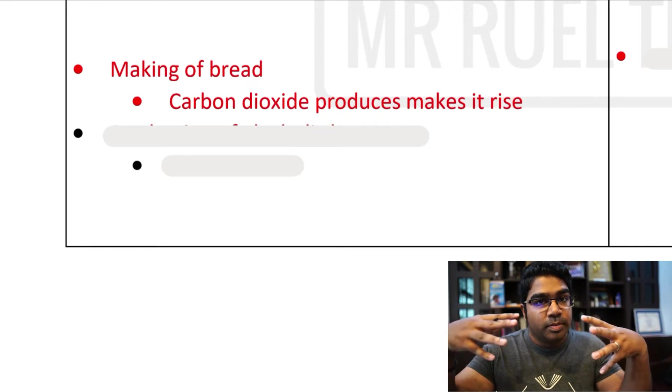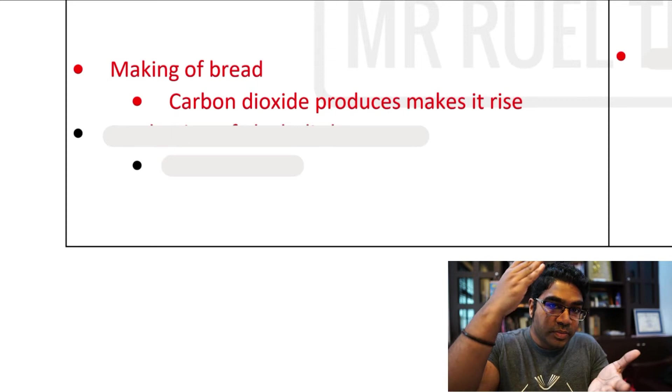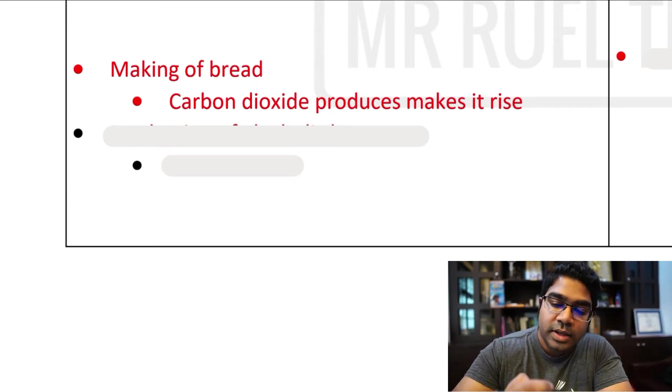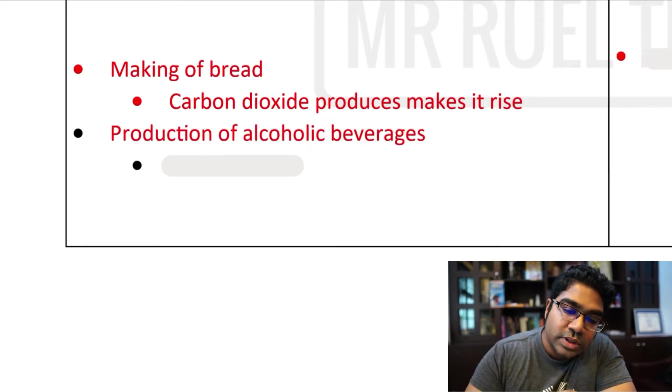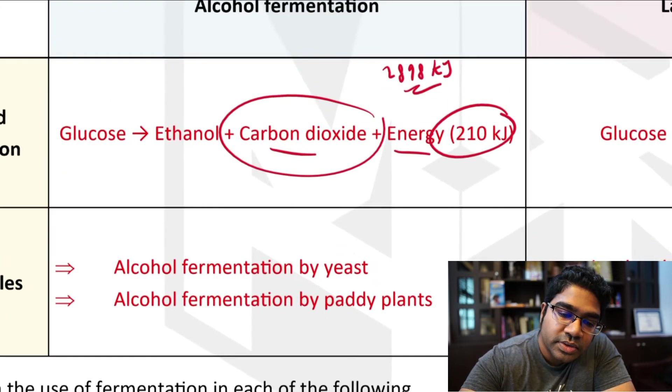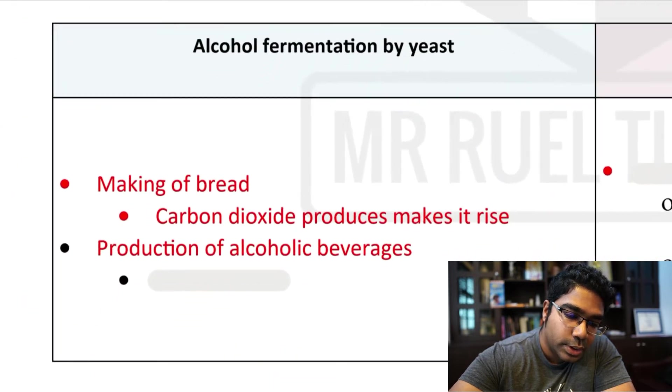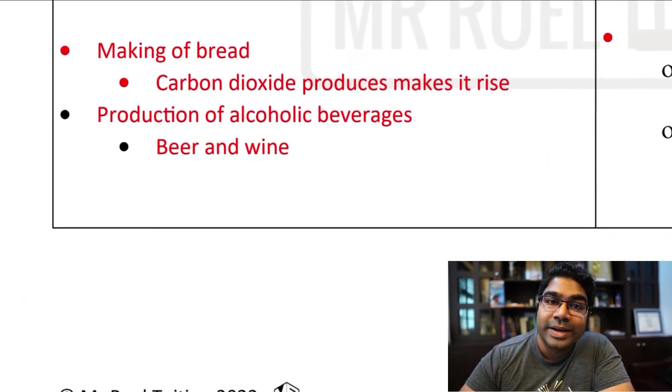This is why when the dough is baked and we have bread and we slice into the bread, we have pockets of gases. And then it is also used in the production of alcoholic beverages because this process produces ethanol which is an alcohol and so it is used in the production of wine and beer.